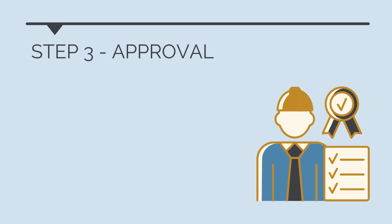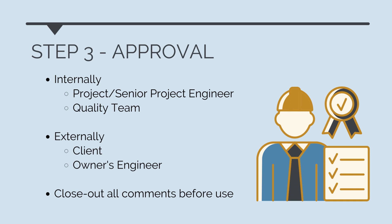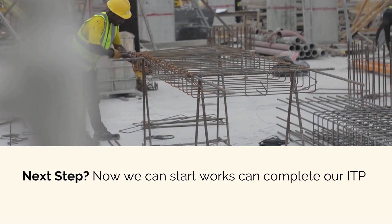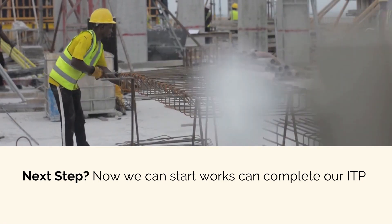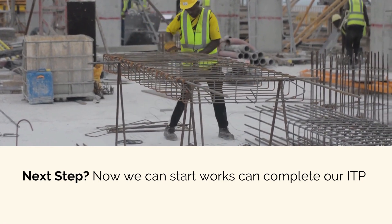Once we've drafted our ITP, we'll then need to get it reviewed and approved. This will happen internally by a senior project engineer and our project's quality management team — a quality engineer should always review our ITPs to ensure all checks have been covered. Once the internal review is complete, we'll submit this to the client or owner's engineer for their approval. All comments need to be closed out prior to using the ITP. I've seen ITPs take up to six weeks to get approval, so we need to be proactive and make sure we're preparing our ITPs long before they're needed on site. Once our ITP is approved, it's time to start works and complete the inspection and testing.